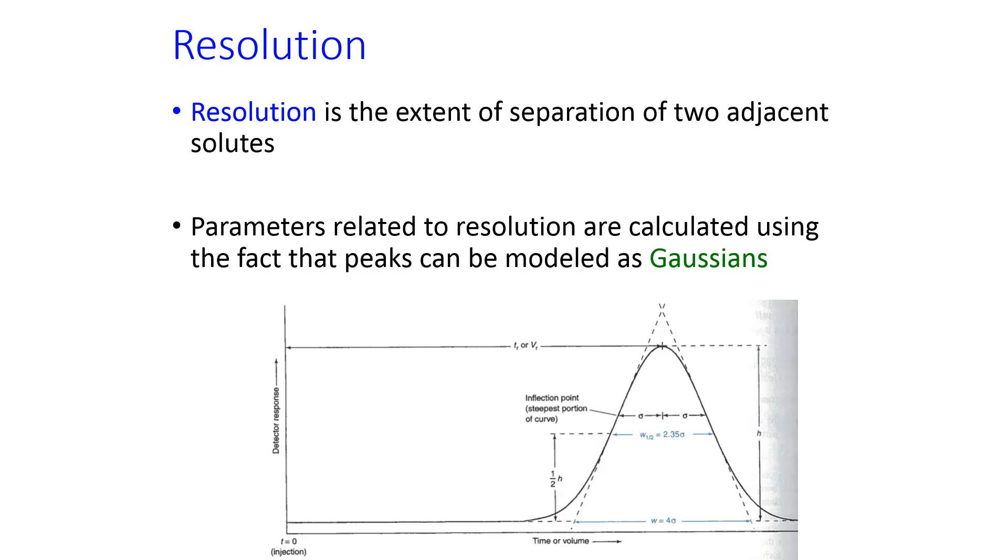When we characterize peaks, one of the main things that we talk about is the idea of resolution. We'll talk much more about this in class, but in general, we compare two peaks and their peak widths and peak heights that are determined by modeling the peaks as Gaussians, so nice, smooth bell curves. And we want them to be separated to such an extent that we can accurately figure out the area underneath each one.